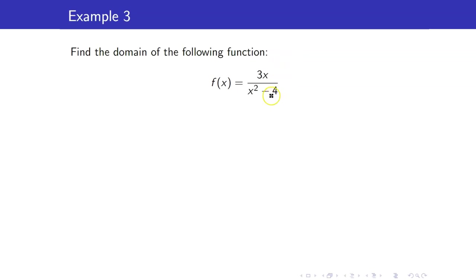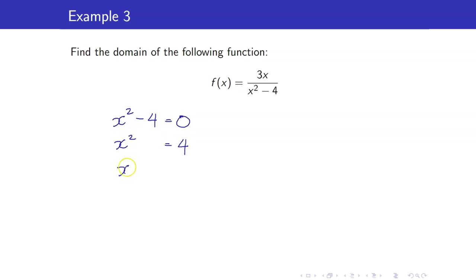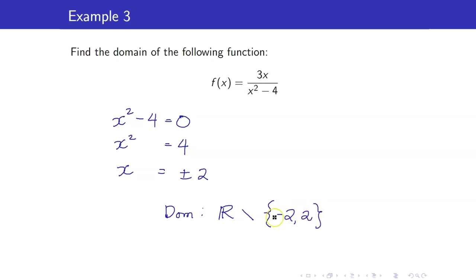Next, consider 3x all over x squared minus 4. In this case, we have a denominator of x squared minus 4. We have to find the values where the denominator equals 0, which is when x equals plus or minus 2. So the domain is the set of all real numbers, take away the set containing negative 2 and 2. Everything is permissible as input except x cannot equal negative 2 or 2.